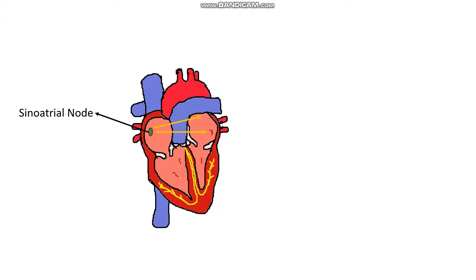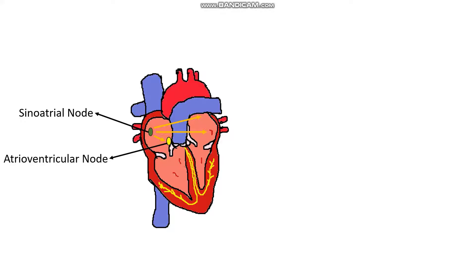In order for our ventricles to contract and push blood into the rest of the circulation, this wave of electricity must make its way from the atria into the ventricles. It cannot take a direct route because of the ring of fibrous tissue that separates the atria and ventricles — the annulus fibrosis. So this wave of depolarisation makes its way to the AV node first, where it is delayed for a short time to fully allow the atria to contract and empty into the ventricles.